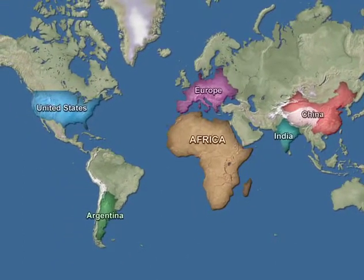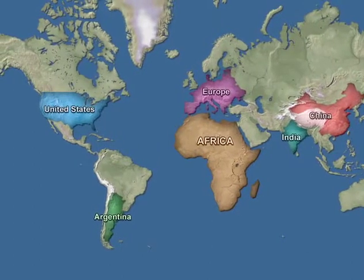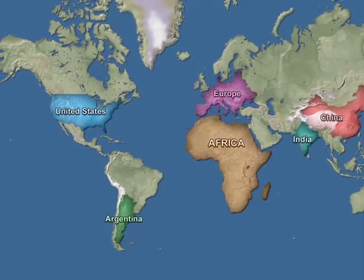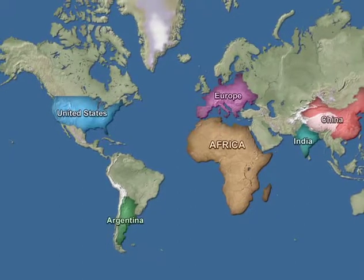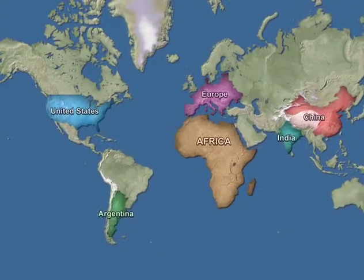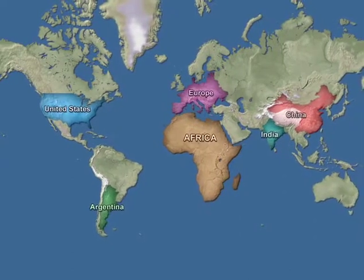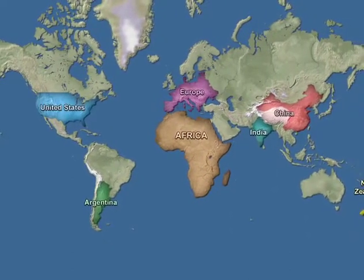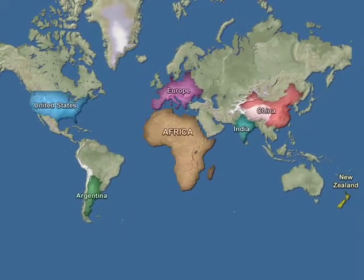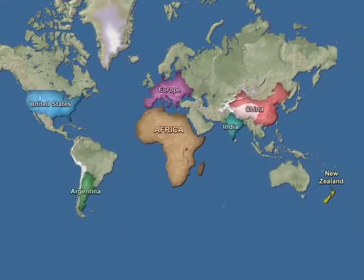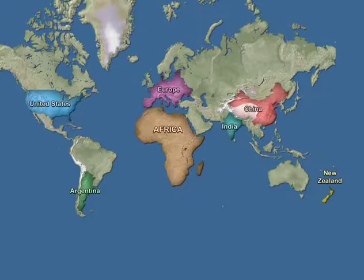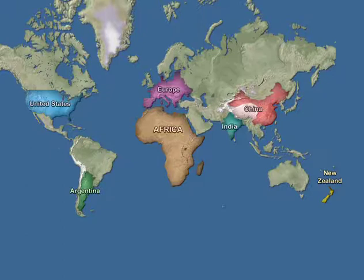To put it a little differently, Africa is three times the size of the continental United States. And to internationalize it a bit: if we take Europe, China, India, Argentina, New Zealand, and the continental United States, Africa is larger than all of those combined — all of Europe, all of China, India, Argentina, New Zealand, and the continental United States.